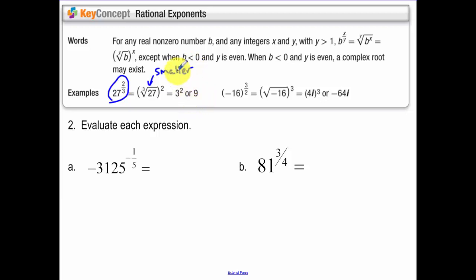What you do when you're finding roots, you're finding a smaller number than that number, and then taking it to the 2nd power. I don't want to have to do 27 to the 2nd power and then cube root of that.